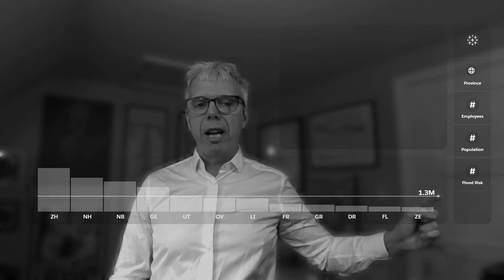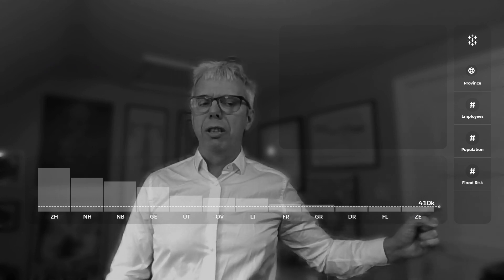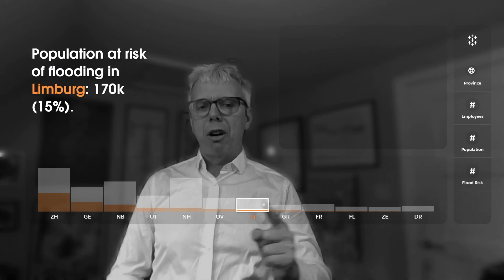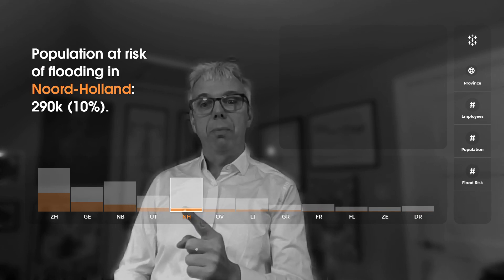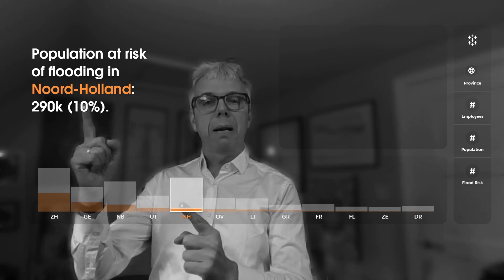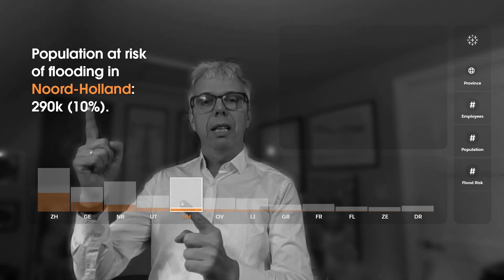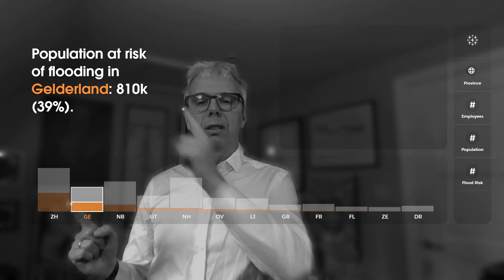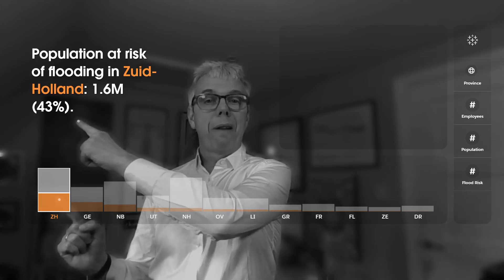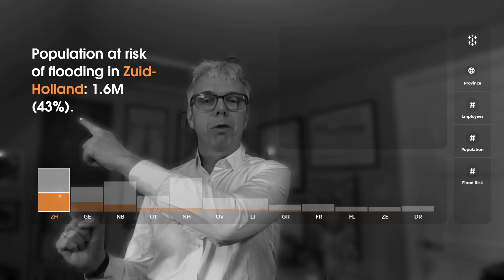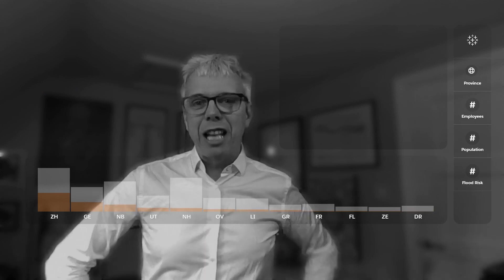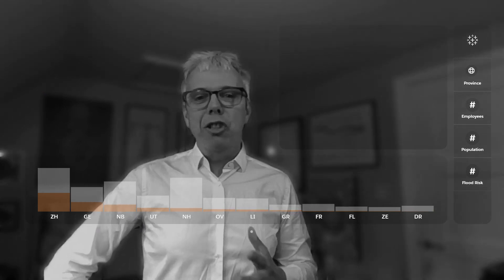I can see the range of values and discuss the insights we get from that. If we add flood risk, the bar chart gets resorted, and now the orange bars show flood risk in each of these provinces. You can see it's only 10% in North Holland, whereas in South Holland that flood risk rises to about 43% of the population — a significant difference depending on where you live.